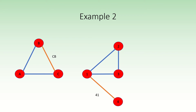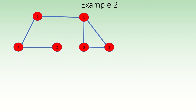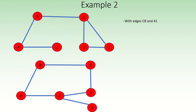Identify vertices c and four. Delete the two original edges. Link vertex b and vertex one. This is the result — it is indeed different than our previous result.